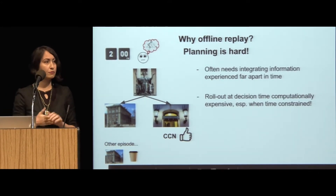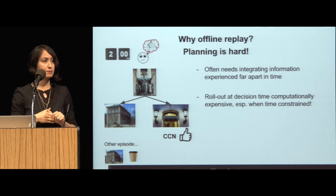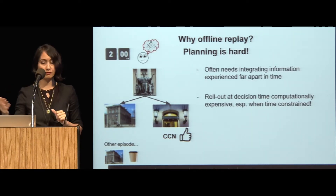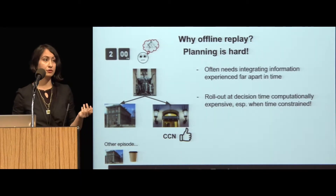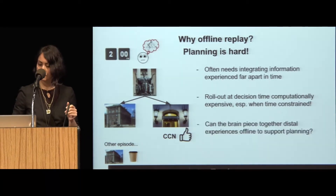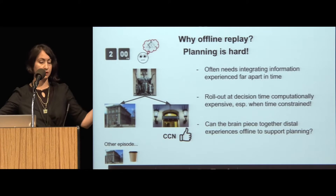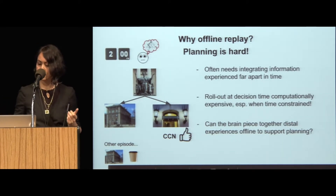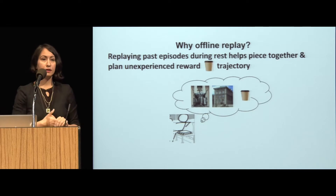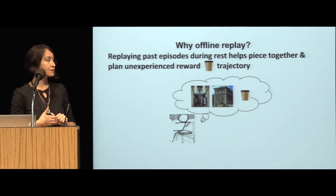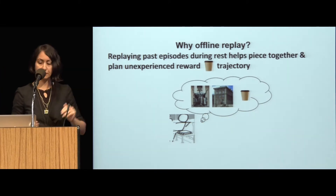Although following Tolman, a lot of people think that the way to do this would be to roll out everything at decision time, it would be way more useful, especially when we are time constrained and we're running away from a predator or we really need coffee, to actually sort of integrate the information offline and not have to spend that much time at the decision time. So what I'm talking to you about today is: can the brain piece together distally acquired episodes or information in order to create predictive updating of representations that support planning? In other words, I'd like to suggest that perhaps while you're sitting there looking at a slide presenting the Dyna model, you're piecing together information about where you can get coffee so that the next day you can optimally plan your reward trajectory.